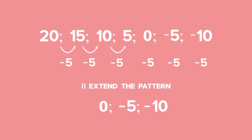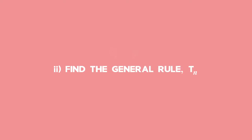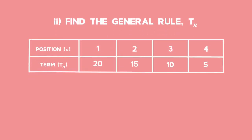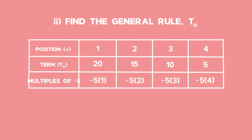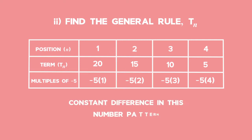We cannot continue subtracting 5 indefinitely — we need a rule that brings it all together. The next part says: find the general rule tn. We'll be working with a method to do this — we can set up a table. We're going to relate the position of each of the terms in the sequence with the value of the term. We'll also add a row with multiples of negative 5, because negative 5 was the constant difference in this number pattern.